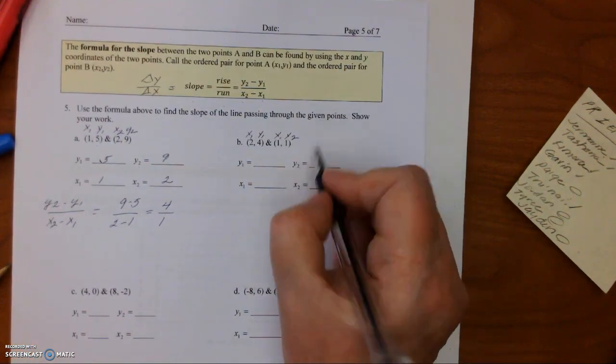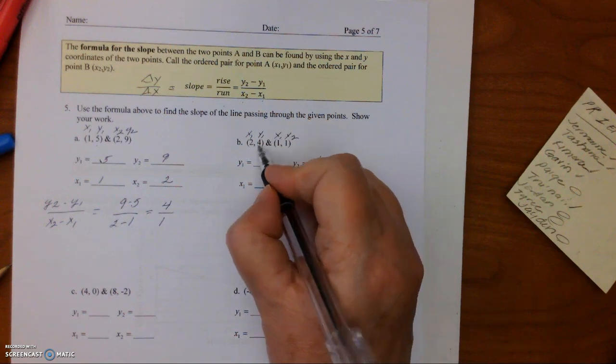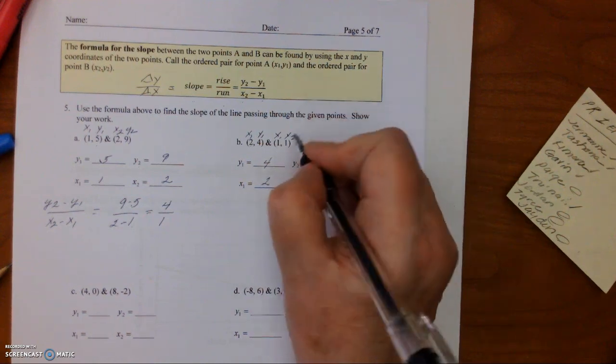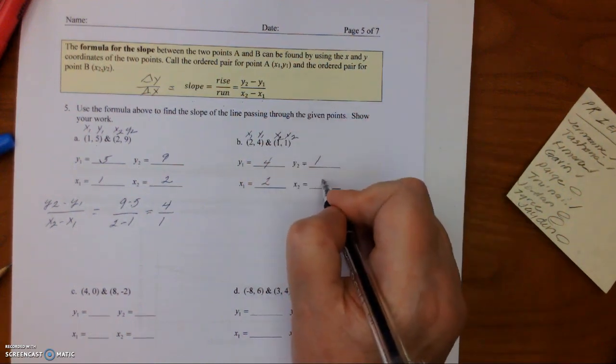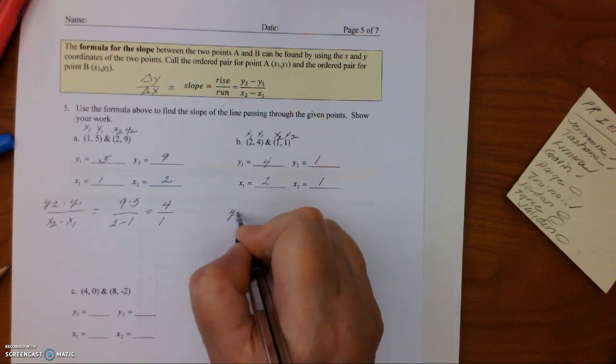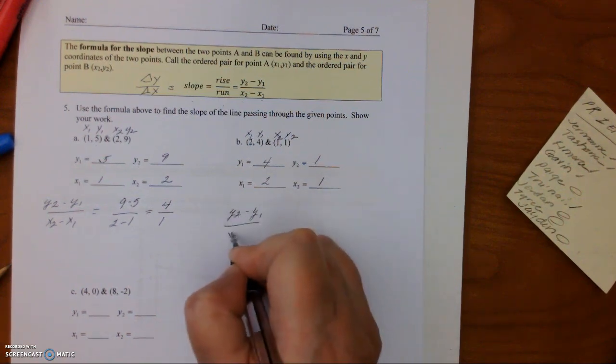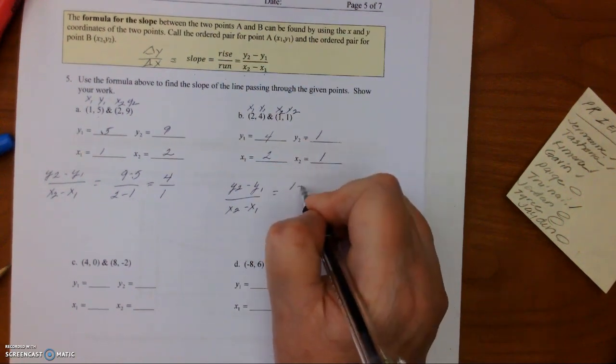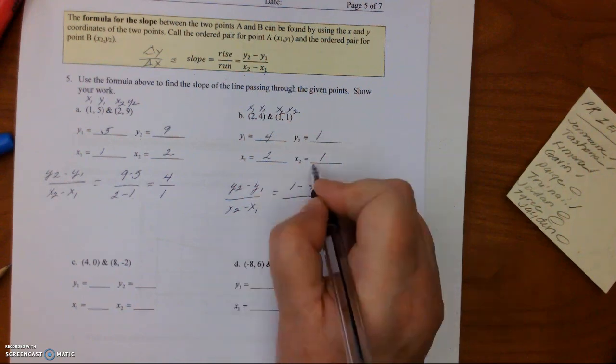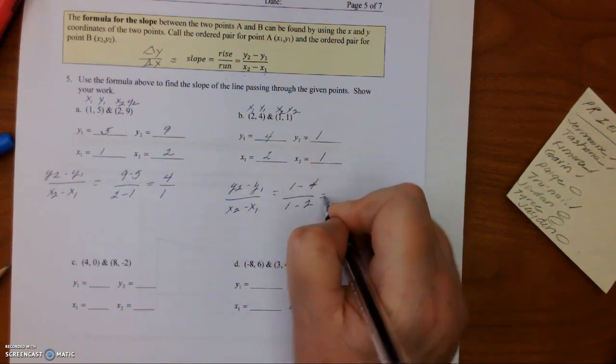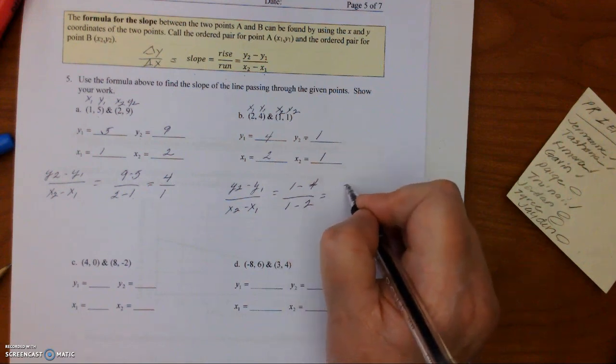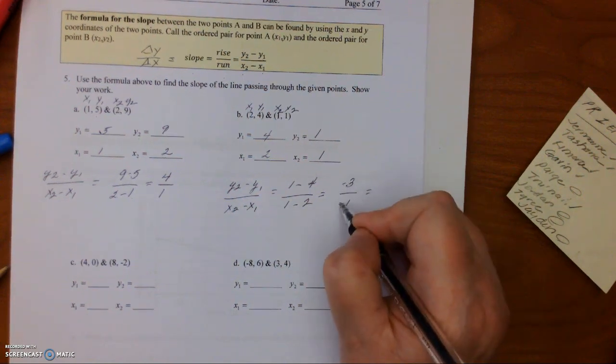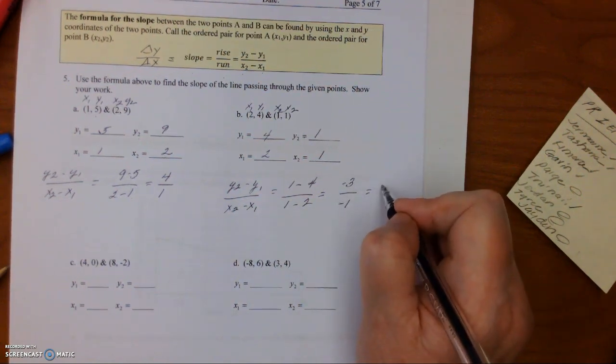Now the next one, we have y2 is 1, y1 is 4, x1 is 2, x2 is 1. So again, (y2 minus y1) over (x2 minus x1) equals (1 minus 4) over (1 minus 2). So 1 minus 4 is negative 3, and 1 minus 2 is negative 1. Remember, two negatives divided by each other becomes a positive, so this is 3 over 1.